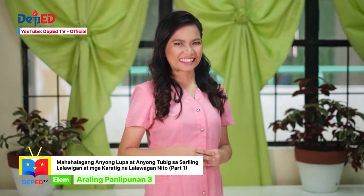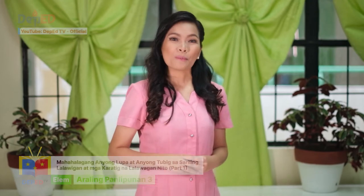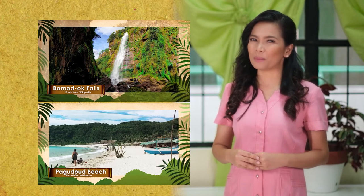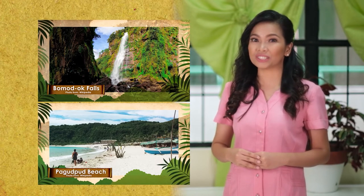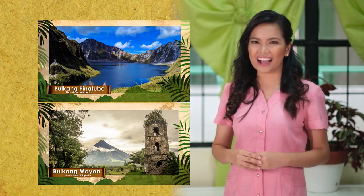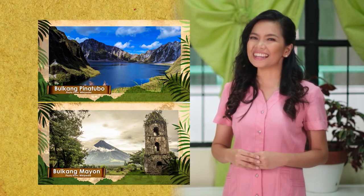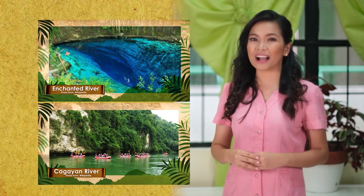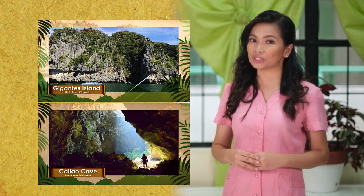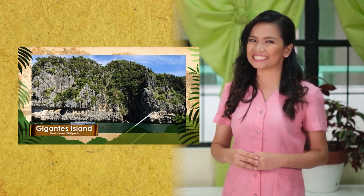Nakuha niyo kaya ang tamang sagot? Alamin natin! Para sa unang bilang, ang anyong lupa ay ang bulkan. Para sa ikalawang bilang, ang anyong tubig na matatagpuan sa CAR ay ang Bomod-ok Falls. Para sa ikatlong bilang, ang Region 5 o Bicol Region ay kilala sa Bulkang Mayon. Para sa ikaapat na bilang, ang pinakamahabang ilog sa bansa ay ang Ilog Cagayan. At para sa ikalimang bilang, ang anyong lupa na matatagpuan sa Region 6 o Western Visayas ay ang Isla ng Gigantes.